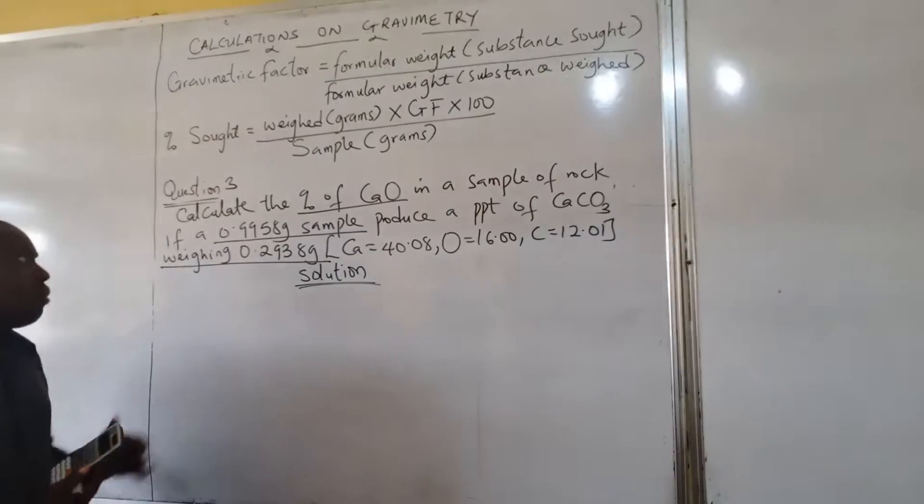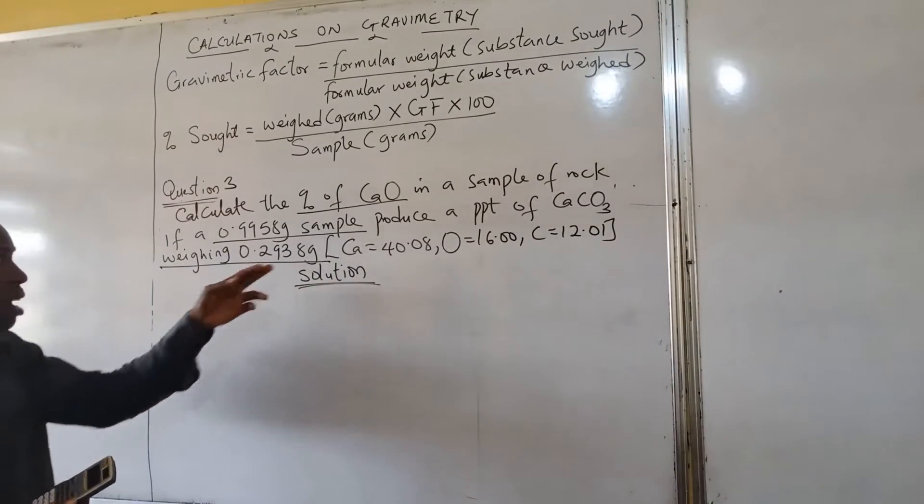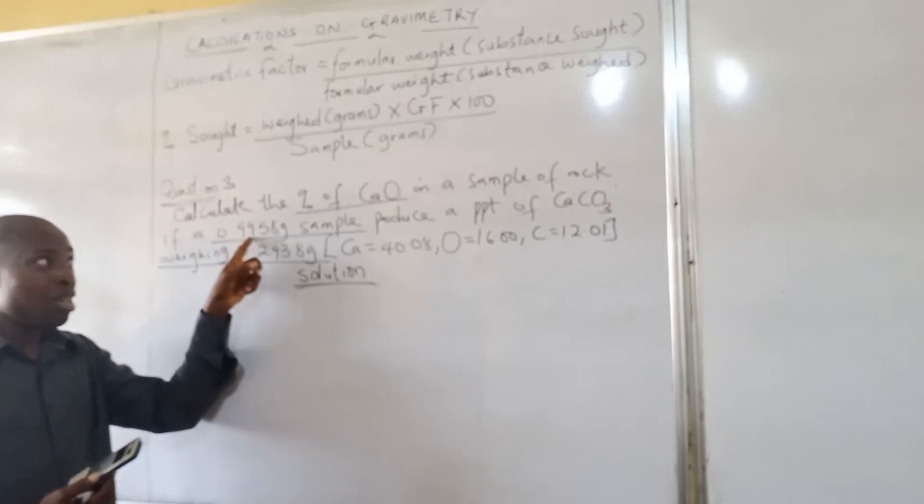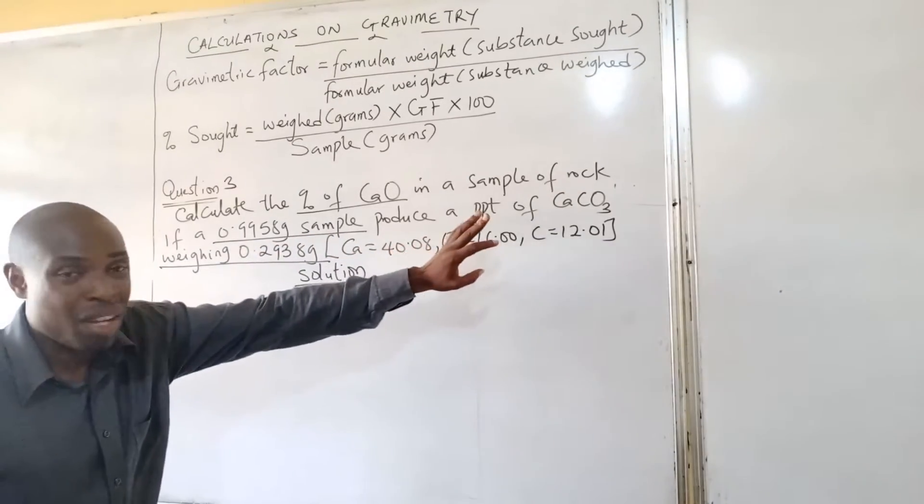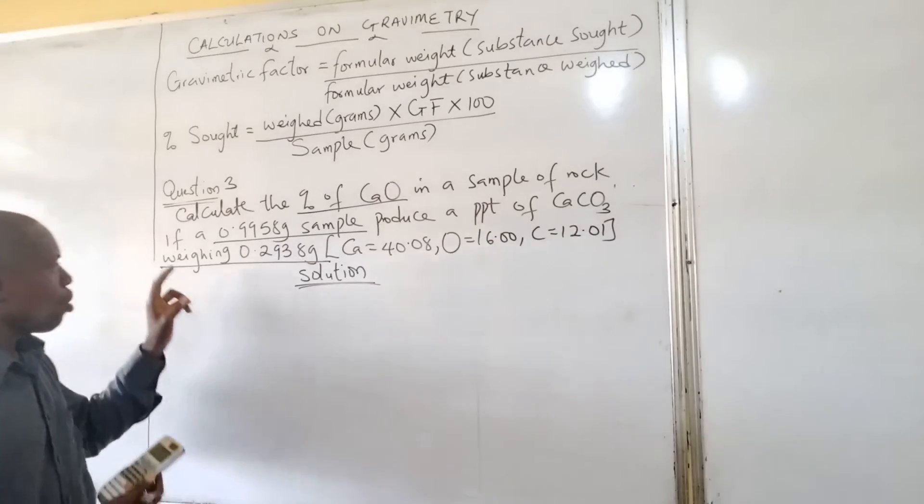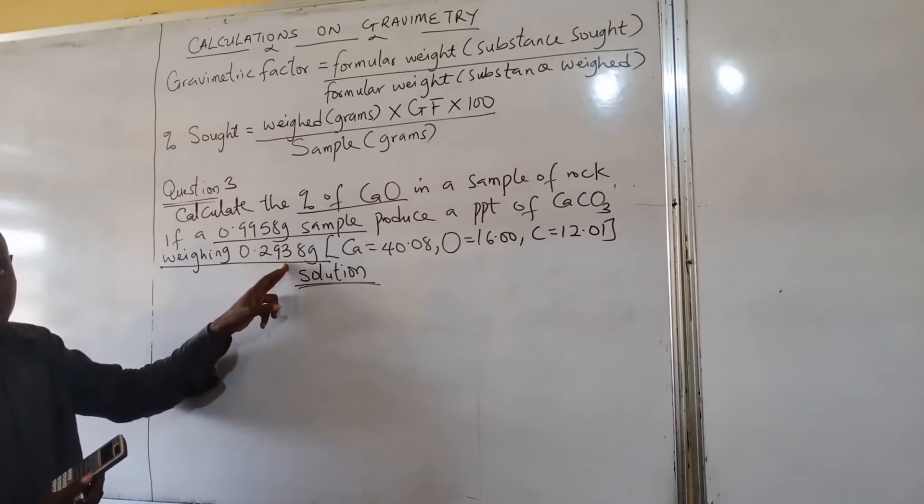In a sample of rock, if a 0.9958 gram sample, which is the weight sample, produces a precipitate of calcium carbonate weighing this amount.